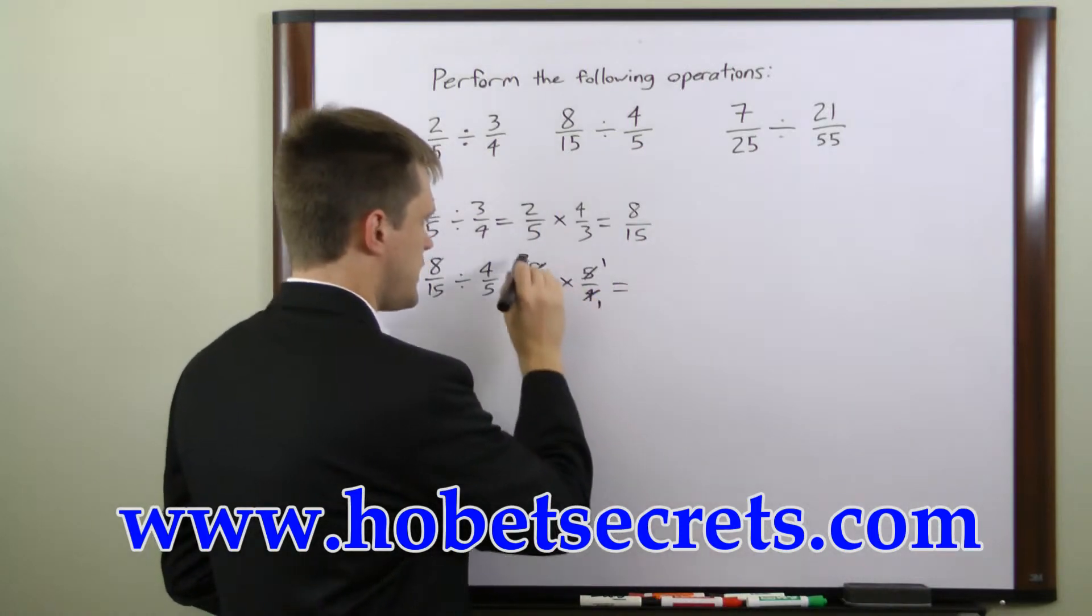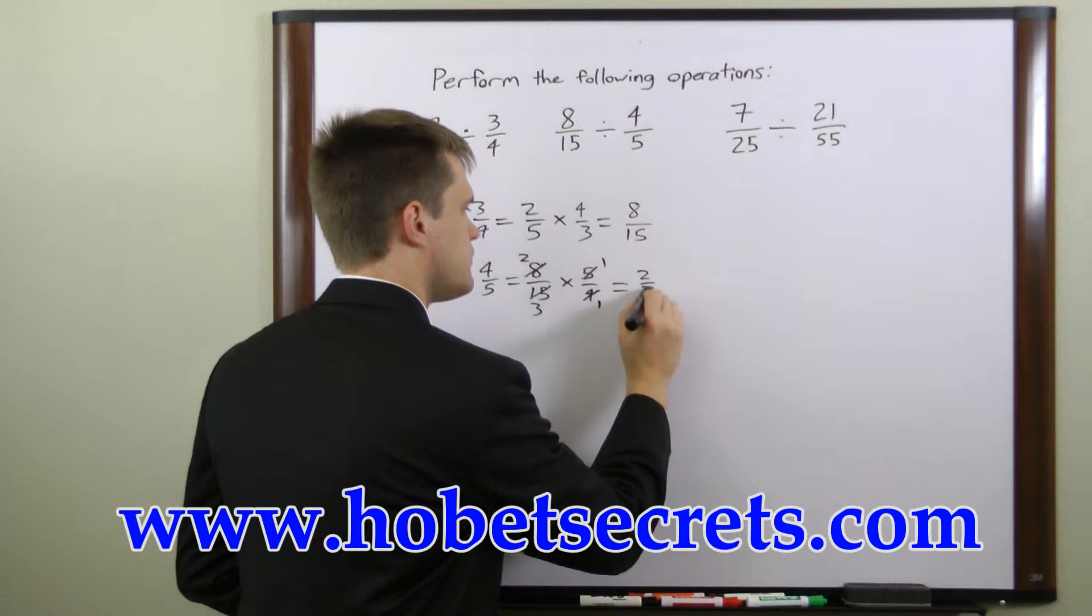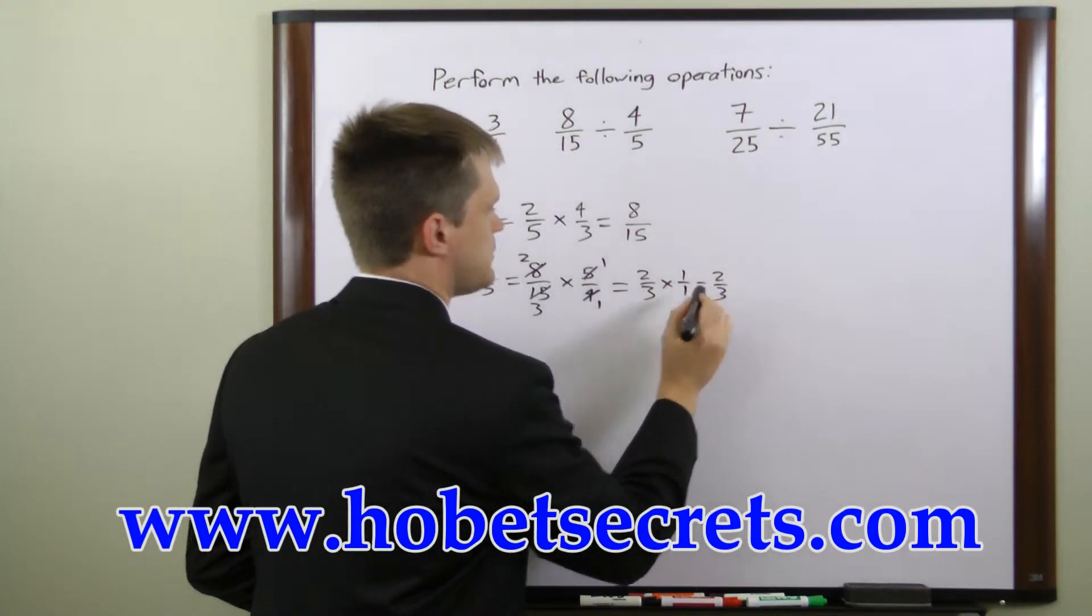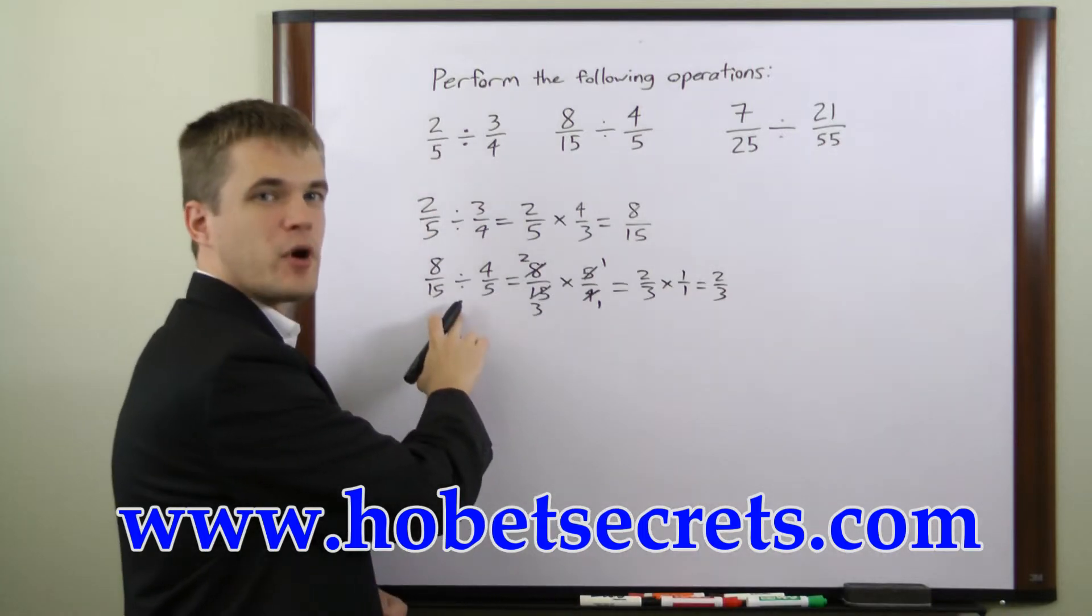So what we're left with now is two over three times one over one or just two over three. So that's the solution to that problem.